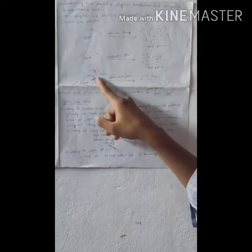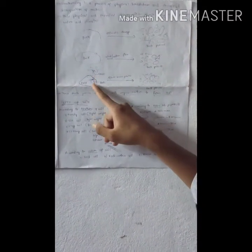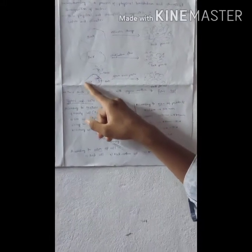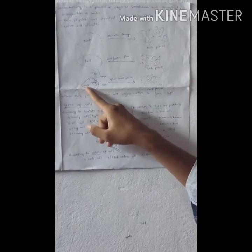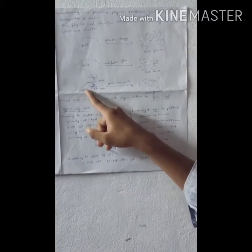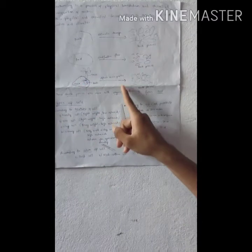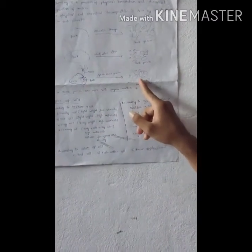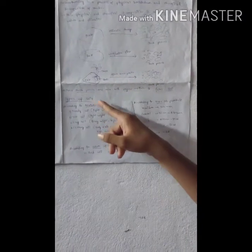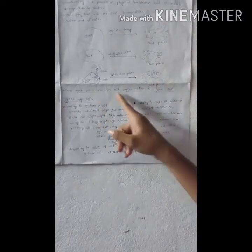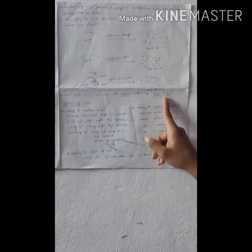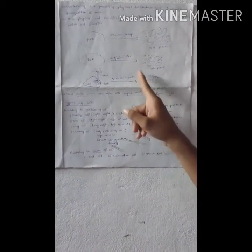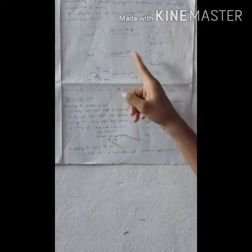Coming to trees — the roots of a tree penetrate into rock cracks and expand them, resulting in the breaking of rock into small pieces. After the weathering process, these rock pieces are mixed with organic matter to form soil. This is how soil is formed by the weathering process.